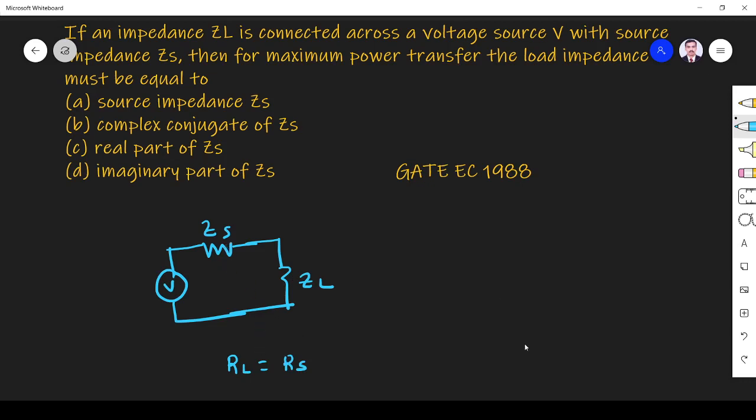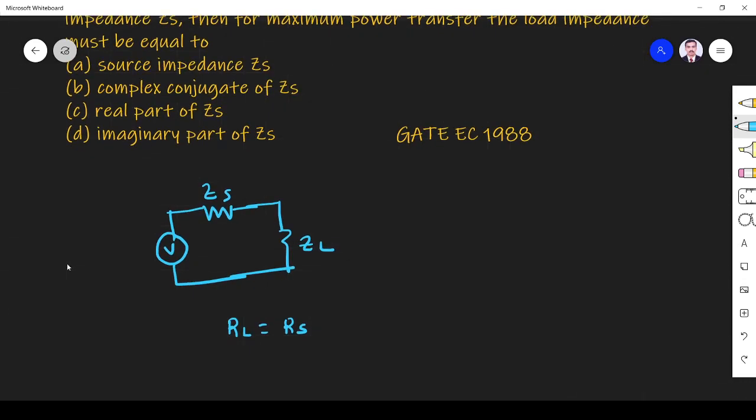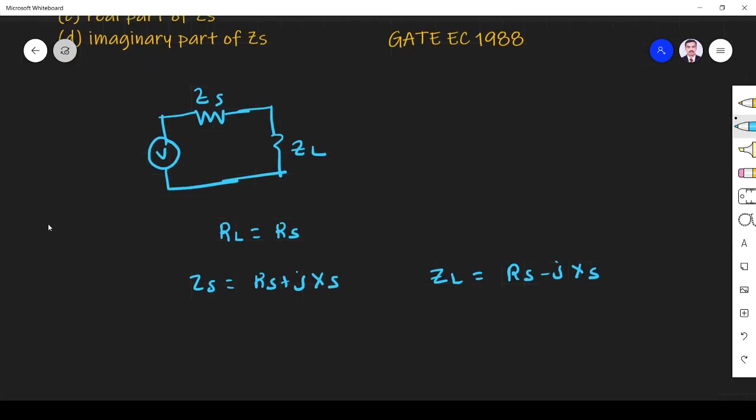Suppose if ZS is equal to RS plus j XS, then maximum power transfer will occur where ZL is equal to RS minus j XS. So that means ZL must be a complex conjugate of ZS.